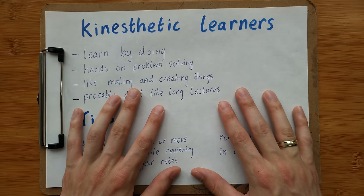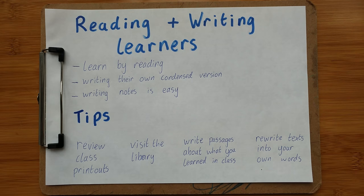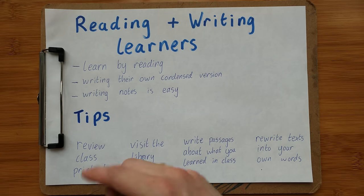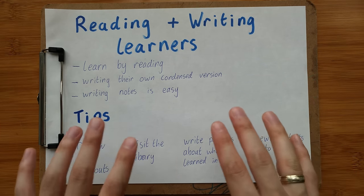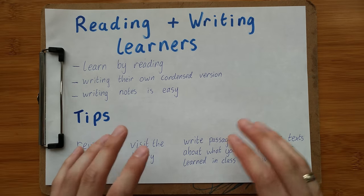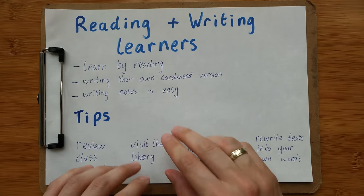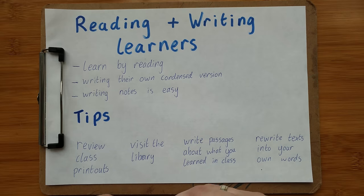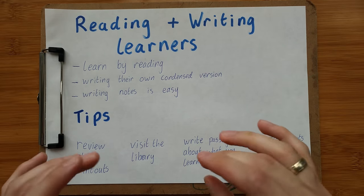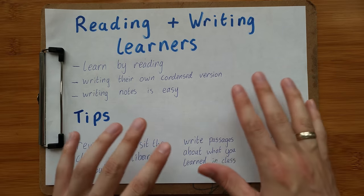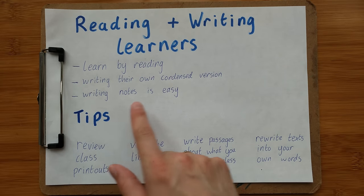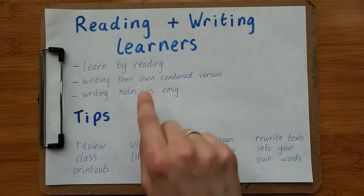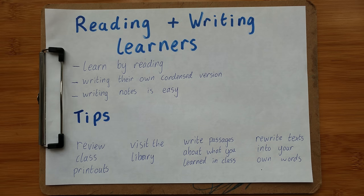The last style is reading and writing learners. They learn by reading — they're very happy to sit down with a book or a printout, read, and take notes. They like writing their own condensed version of a passage. If the teacher gave them a book, they might read a paragraph and write a short sentence about what happened. They find writing notes easy.